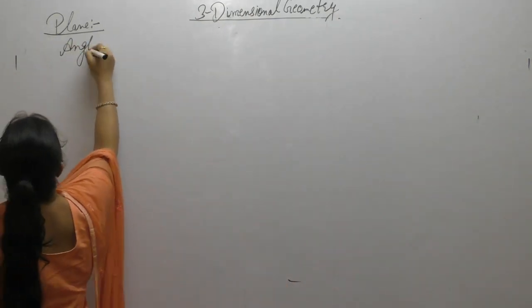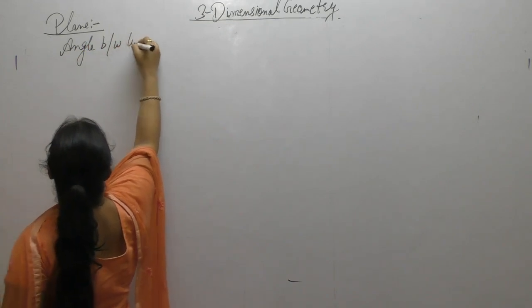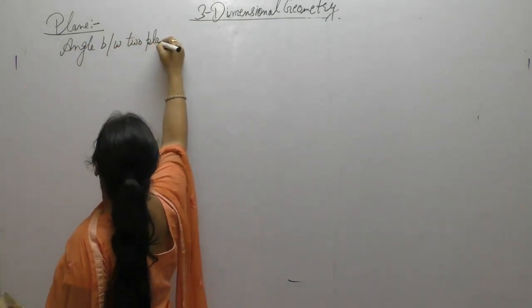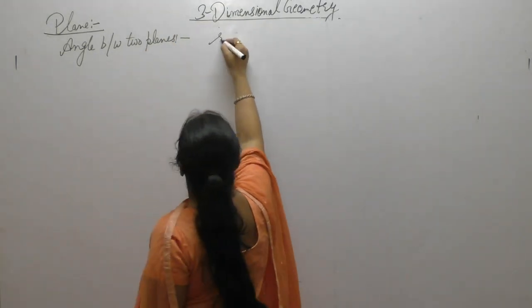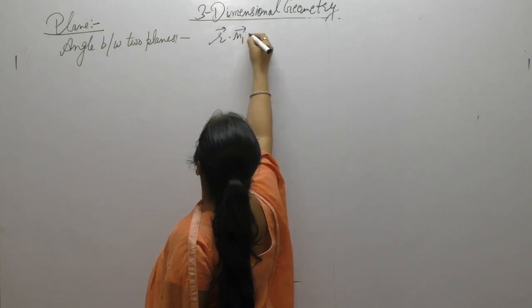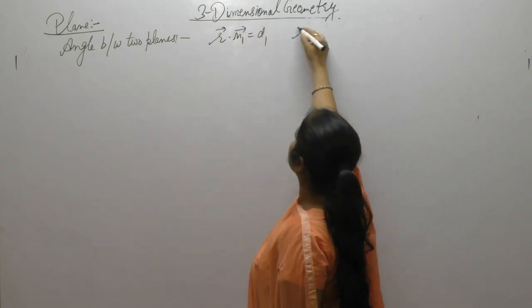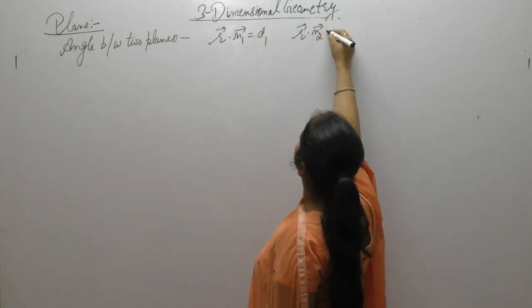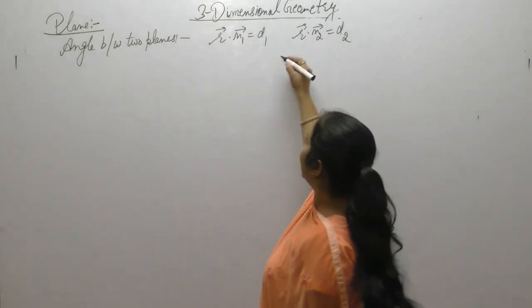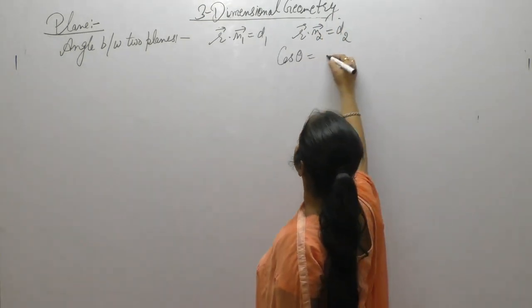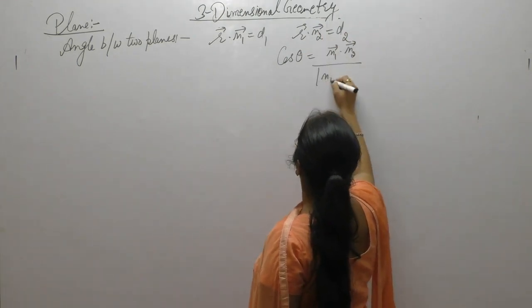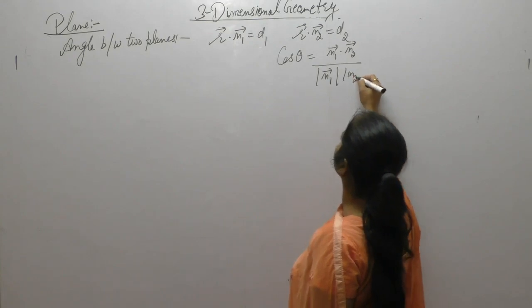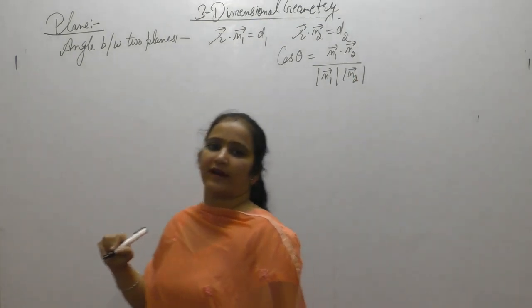Next is angle between two planes. If the vector equation of one plane is R dot N1 equals D1 and the second equation of the plane is given, then the angle between these two planes is N1 vector dot N2 upon magnitude of vector N1 and magnitude of vector N2.